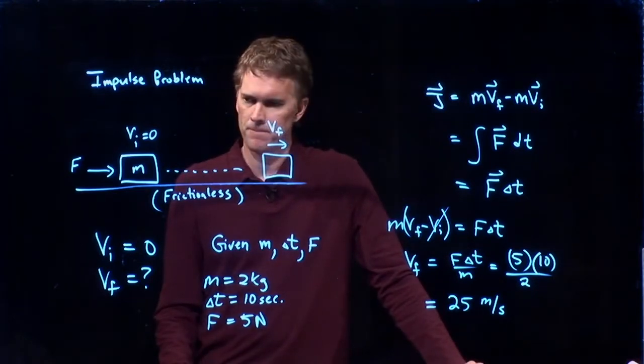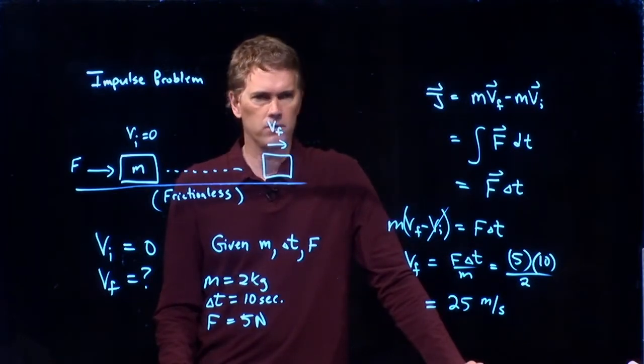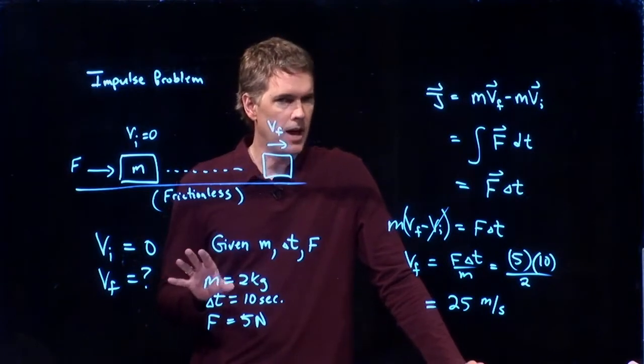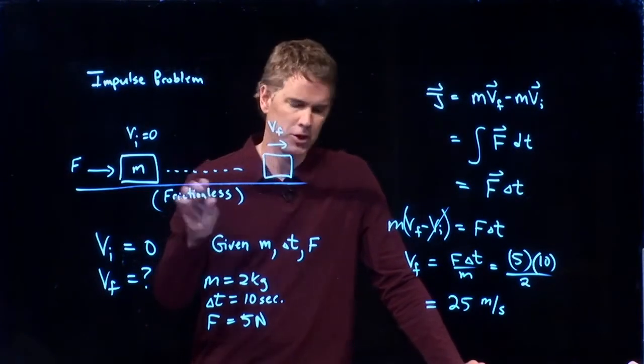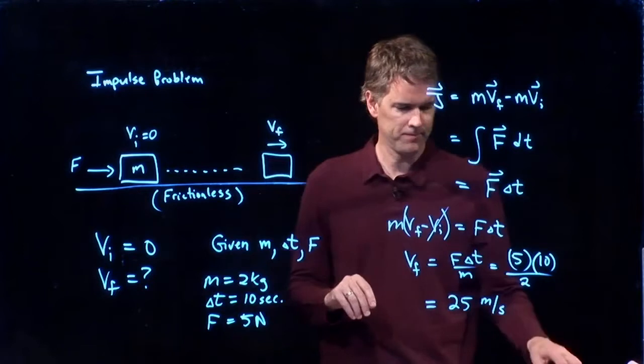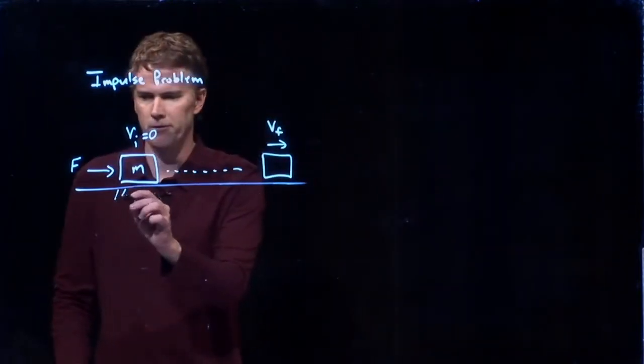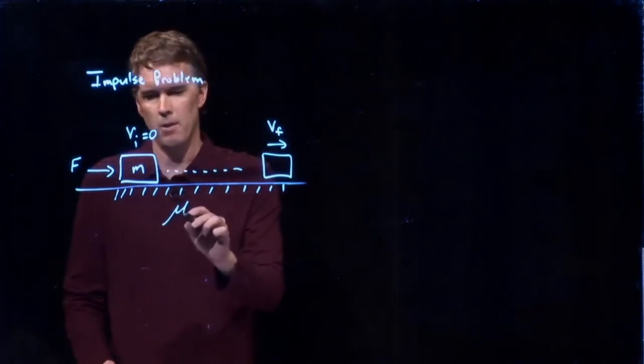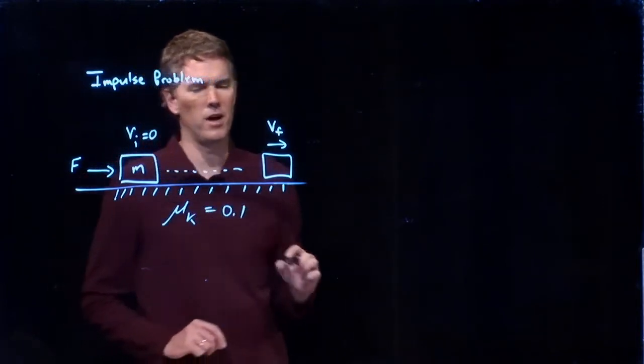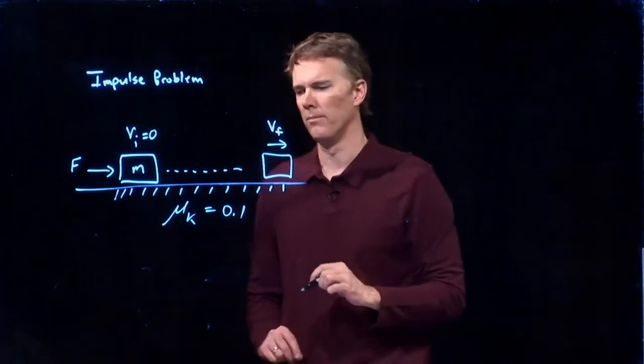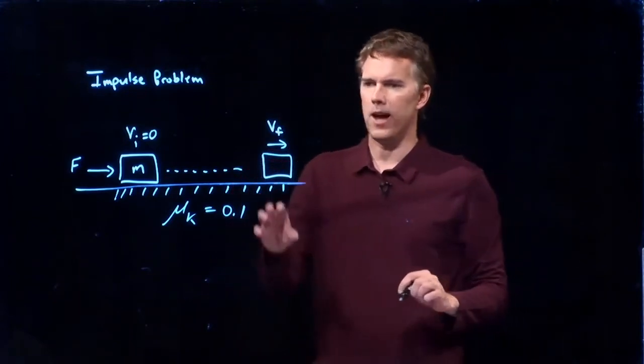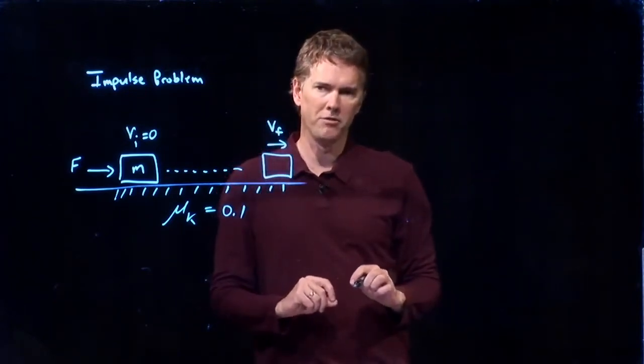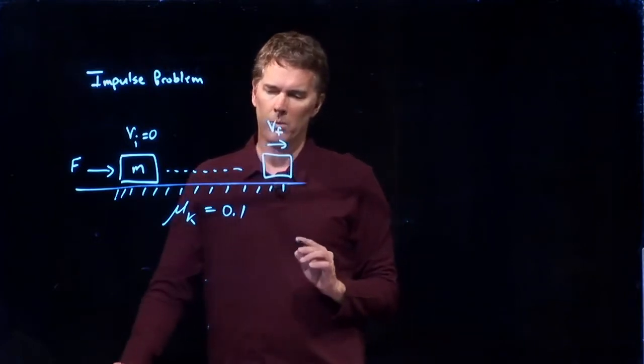Good. Let's say that we make it slightly more complicated now, and let's add some friction to the problem. We'll make the surface kind of rough, and we will say that mu k is some small value, maybe it's 0.1. And let's ask the same question now, what is vf?